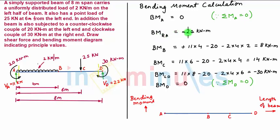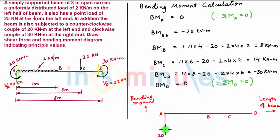Bending moment just to the right of A is minus 20 kilonewton meter, so we connect this point with a vertical line. At point A, the bending moment will be 20 kilonewton meter. Now bending moment at B is 8 kilonewton meter, which is positive.